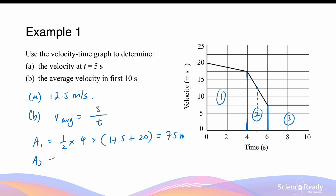Area 2 is also a trapezium, so we'll use the same formula: half times by the height, which is 2 seconds, times by A, which is 7.5 meters per second, plus B, the longer side, that is 17.5 meters per second. This gives a displacement of 25 meters.